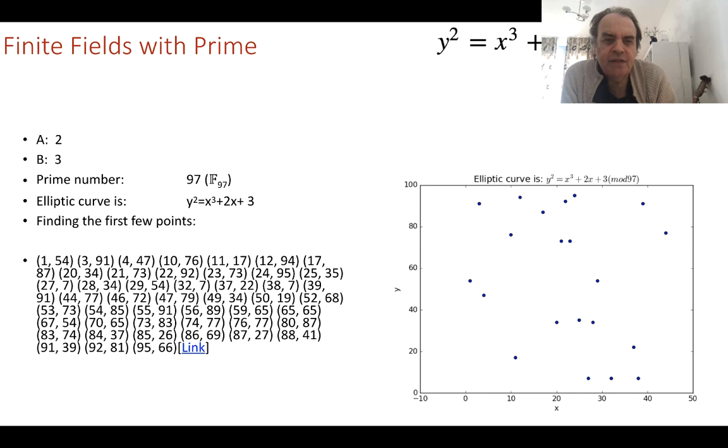So what does it actually look like when we define a finite field? Well, there are only certain values that will work when we take the mod of 97.